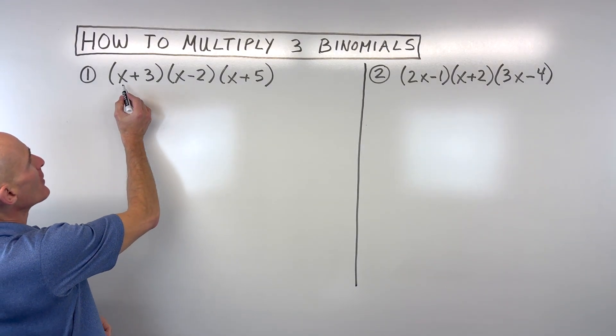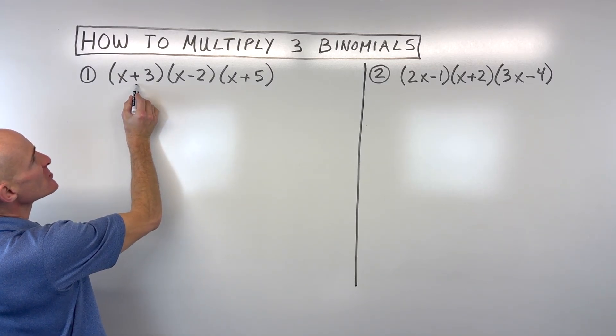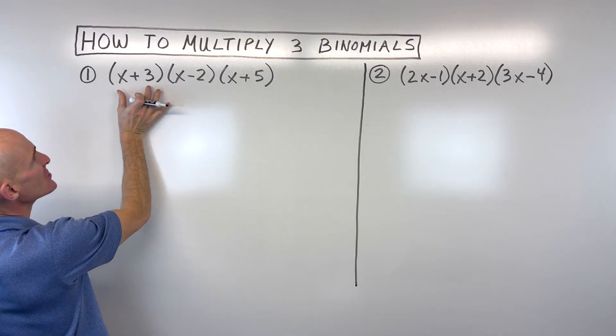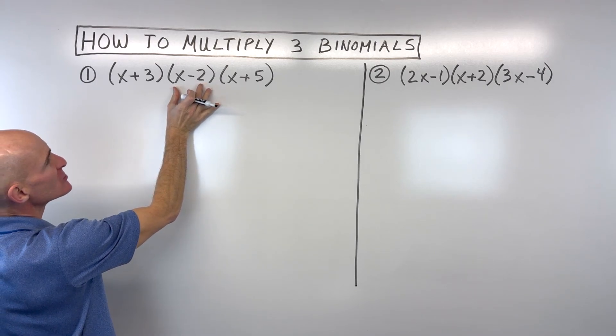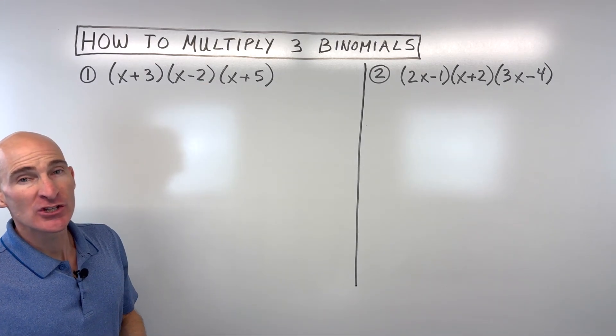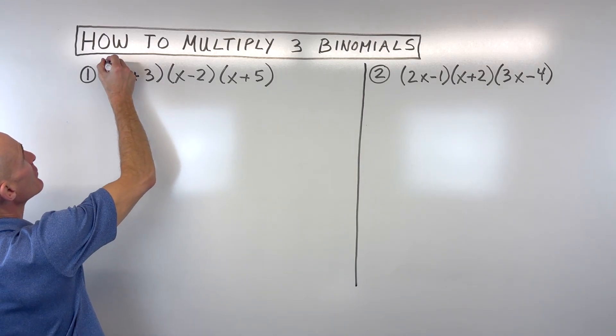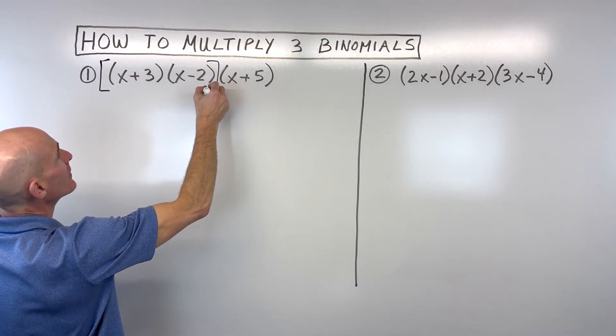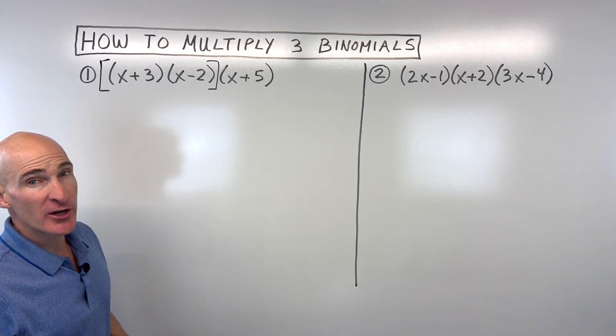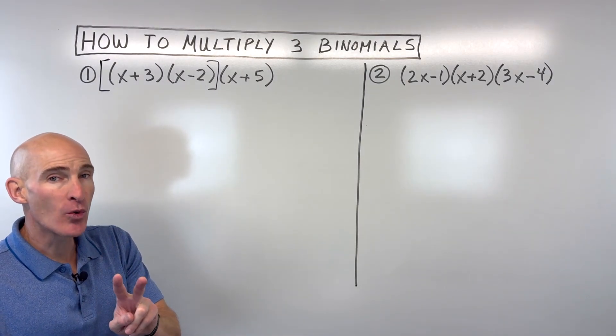So a binomial represents two terms. The terms are separated by plus or minus. So you can see we have two terms times two terms times two terms. What you want to do is pick two of those binomials to multiply together first. For example, I'm going to take these first two binomials here on the left, and I'm going to do the distributive property twice.